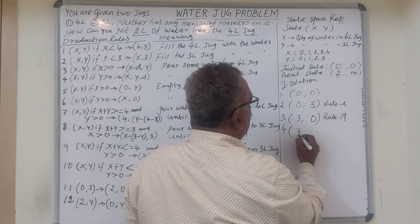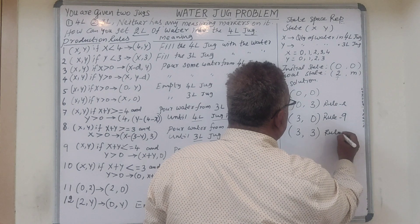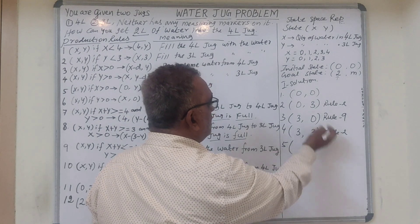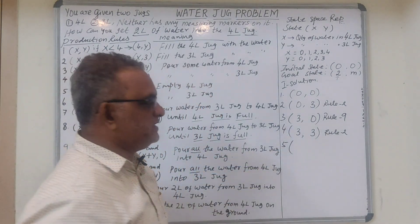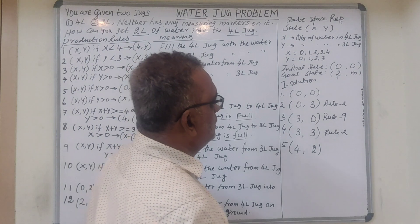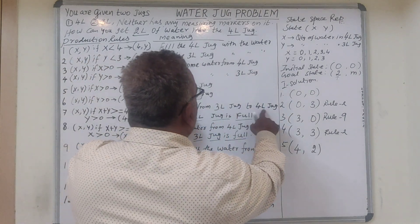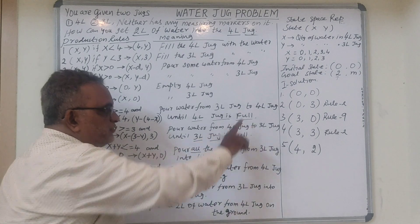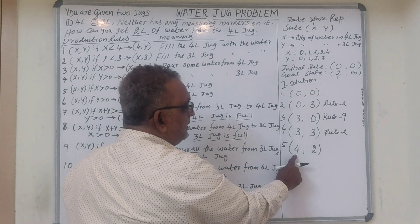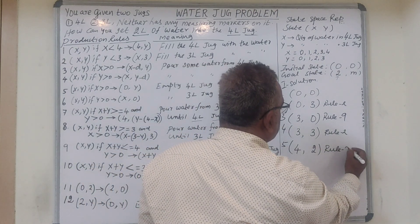Next, we fill up the 3-litre jug again — applying rule 2 once more, giving (3, 3). Now we transfer water from the 3-litre jug into the 4-litre jug using rule 7 — pour water from the 3-litre jug until the 4-litre jug is full. As a result the 4-litre jug becomes 4 and the 3-litre jug becomes 2, giving state (4, 2). The production rule applied is rule 7.